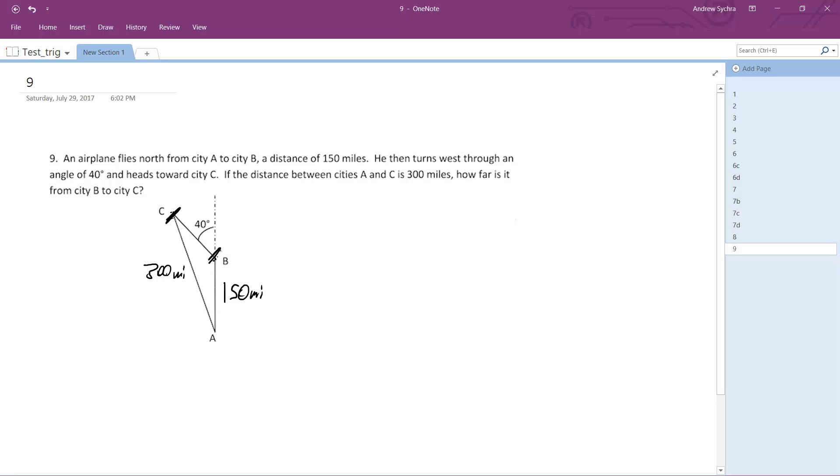So from here to here, how far is it? We're going to solve for that using rules of triangles. Angle B here is going to be 180 minus 40, supplementary angles. So 180 minus 40, which is 140 degrees.